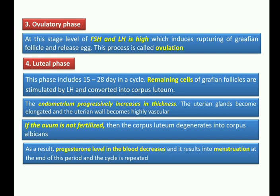After the ovulatory phase, the egg (secondary oocyte) is released. The next phase is the luteal phase, which includes days 15 to 28 of the cycle. In this phase, the remaining cells of the Graafian follicle are stimulated by LH (luteinizing hormone). Under the action of LH, these remaining cells of the Graafian follicle are converted into the corpus luteum.